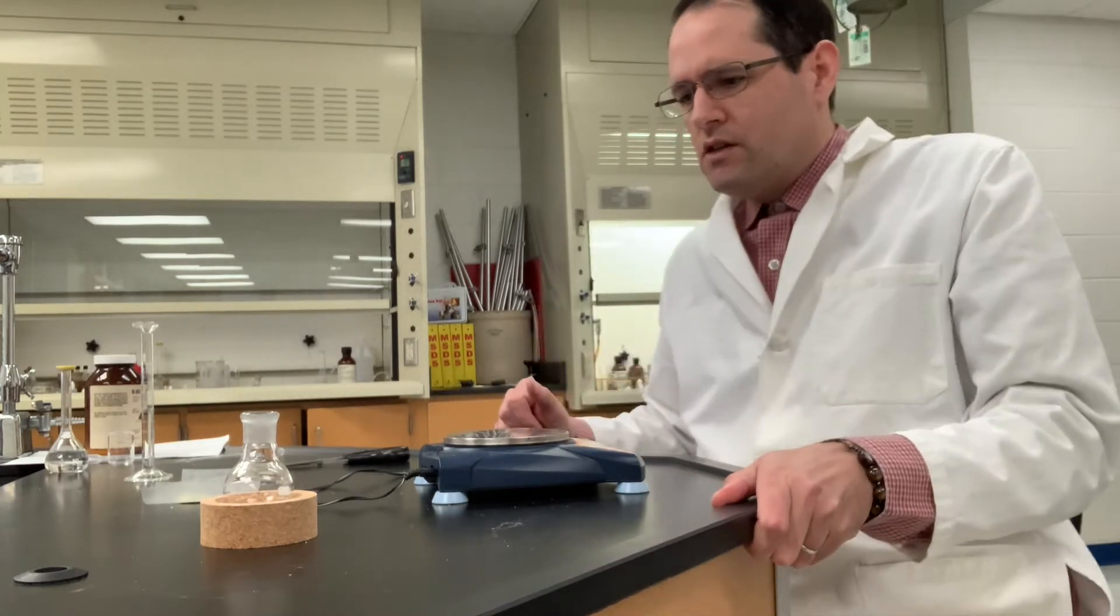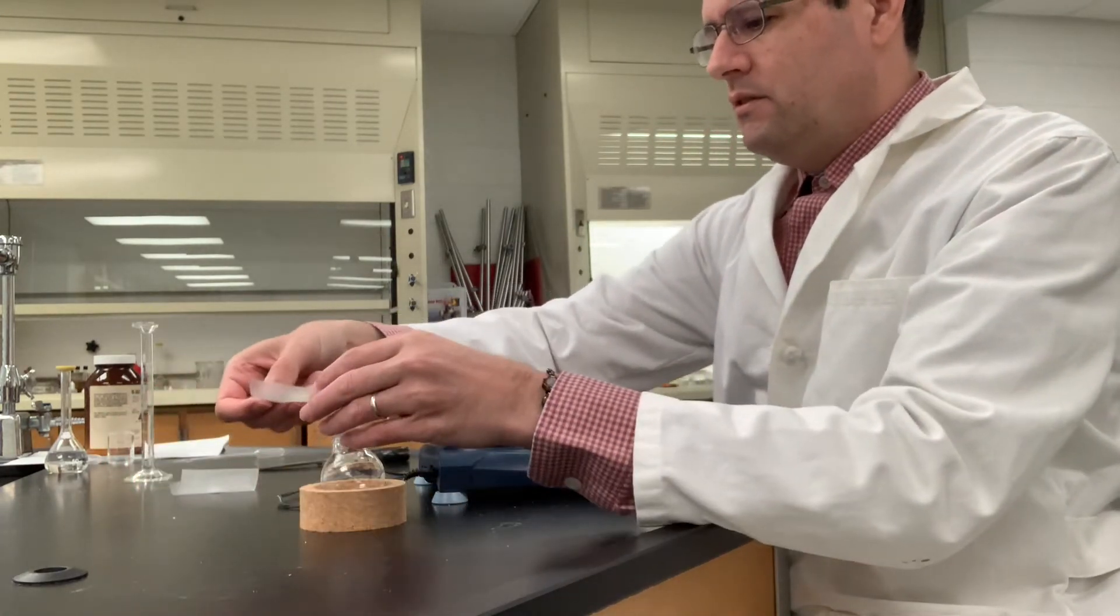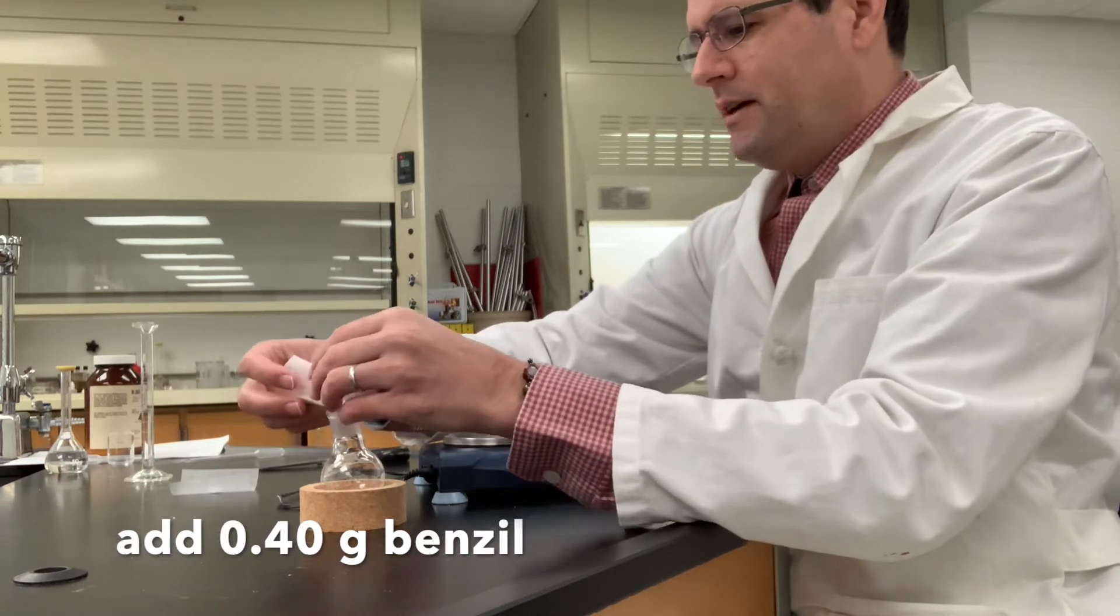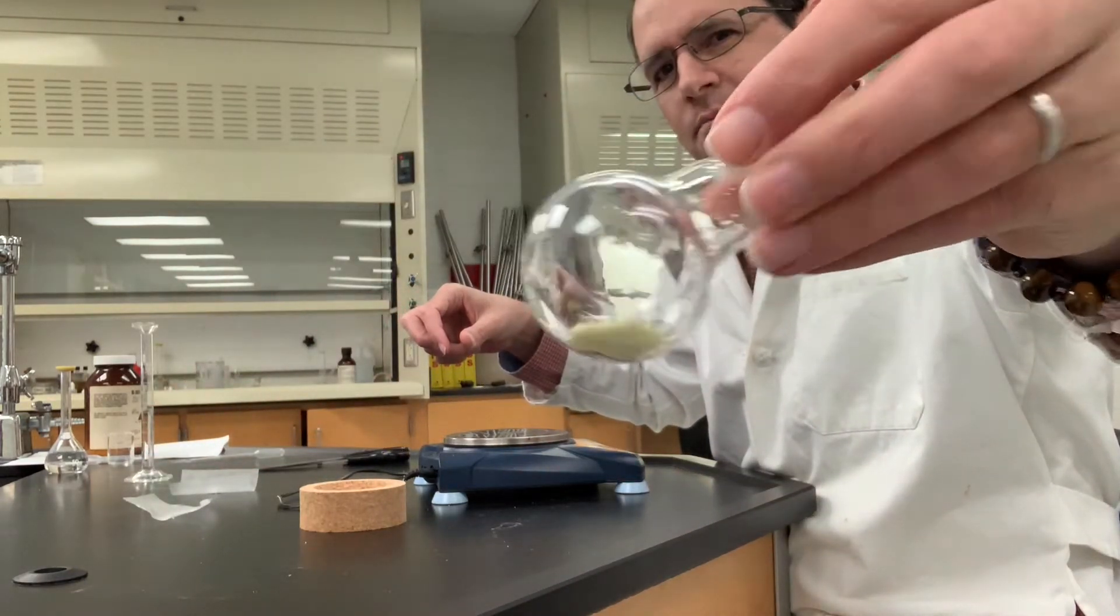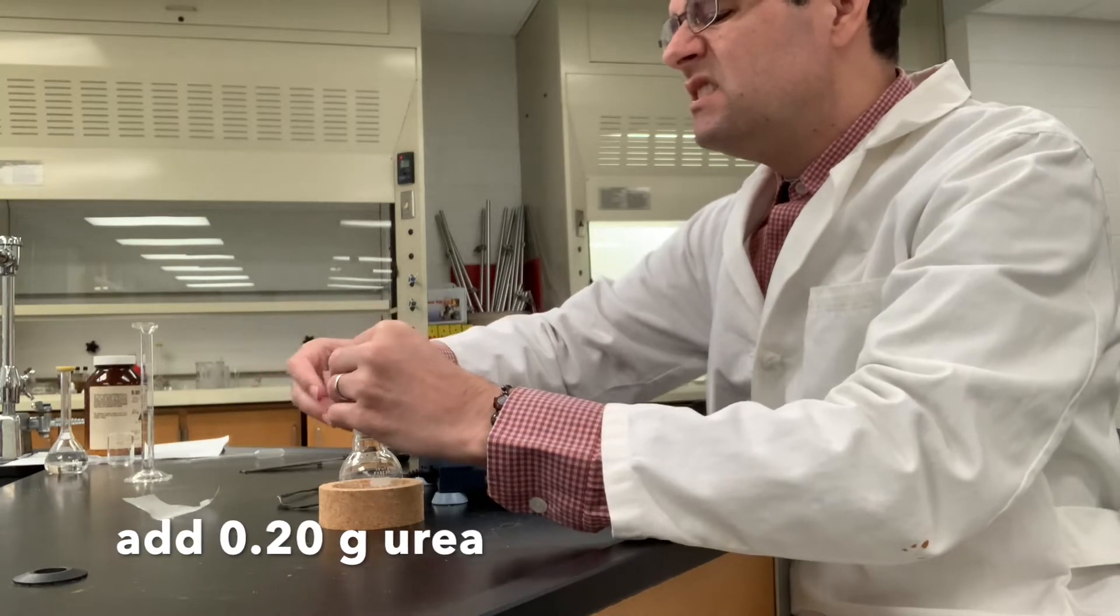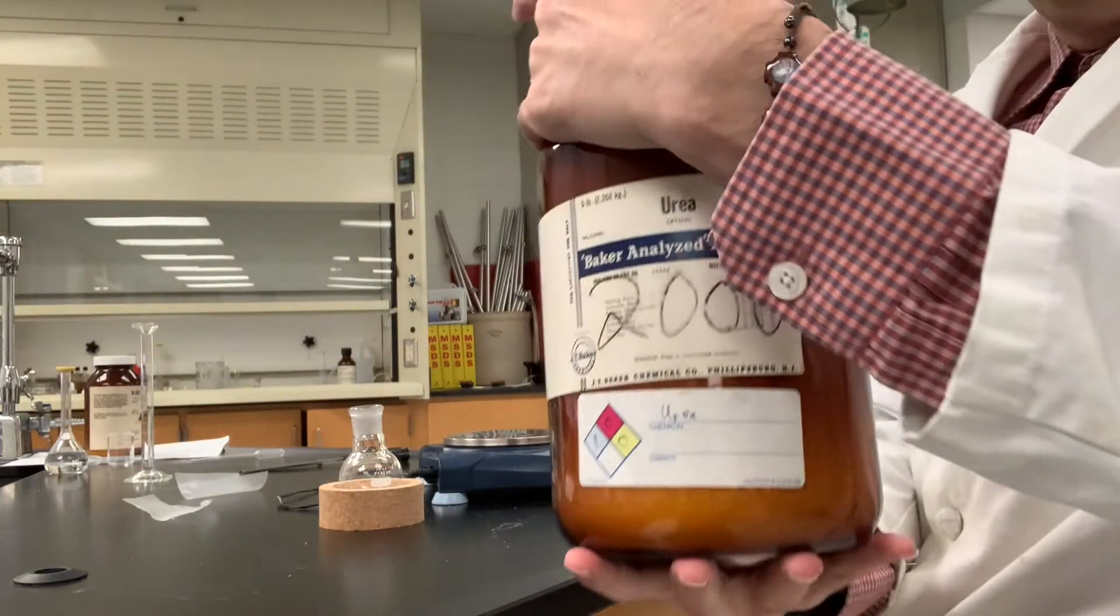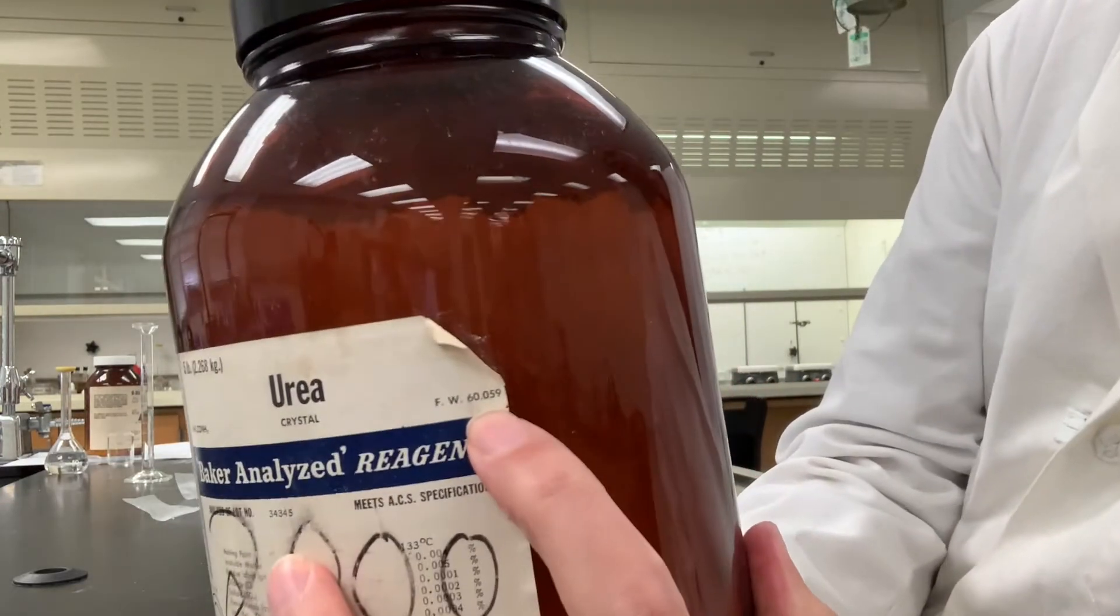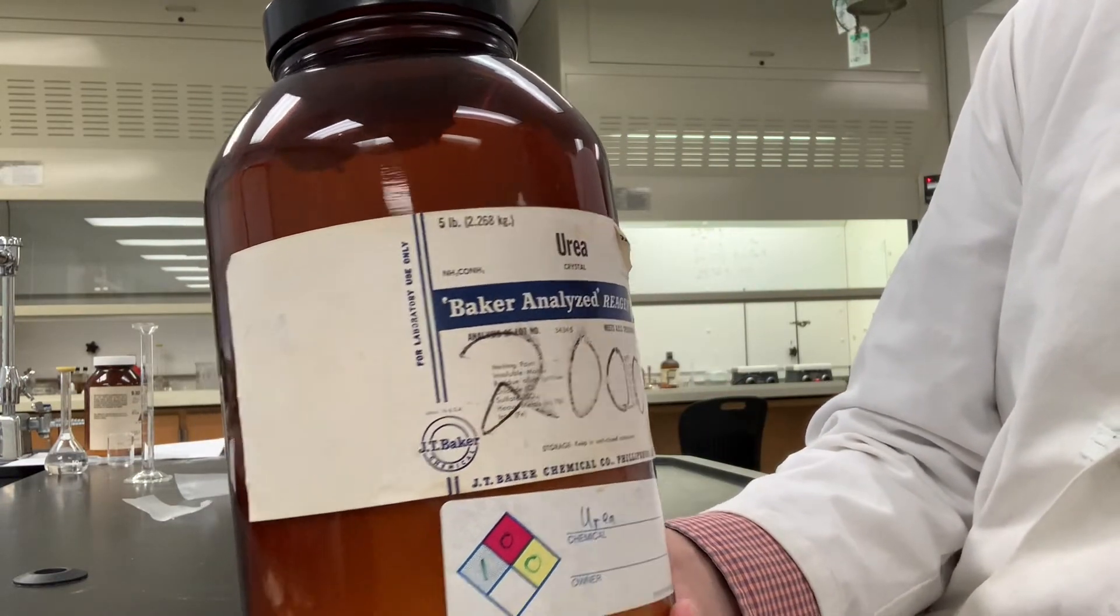We're going to grab a 50 milliliter round bottom flask and add 0.40 grams of benzyl that we made in the previous lab. Benzyl has this bright yellow color to it. We're going to add urea, which is a fertilizer also used in synthesis. Normally I hold these bottles up so you can see the formula weight and information about the bottle - this is a five pound bottle, so certainly plenty.